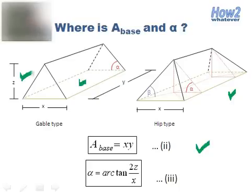Afterwards, you can get the alpha angle with equation 3. But always remember not to confuse between alpha and beta because they are not the same. Finally, you can measure the roof surface area using the equation described on the previous slide.